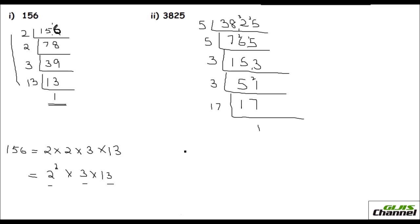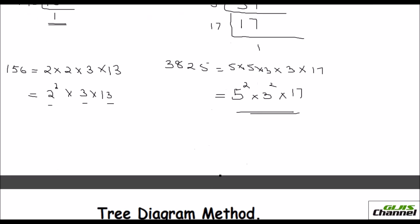I can say that 3,825 is equal to 5 times 5 times 3 times 3 times 17. Or you can make it as powers. So that's 5 squared, because you have 2 fives, it is 5 squared times 3 squared times 17.